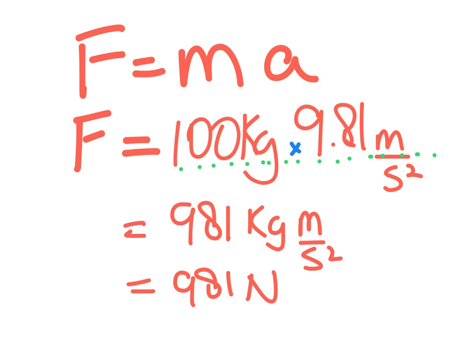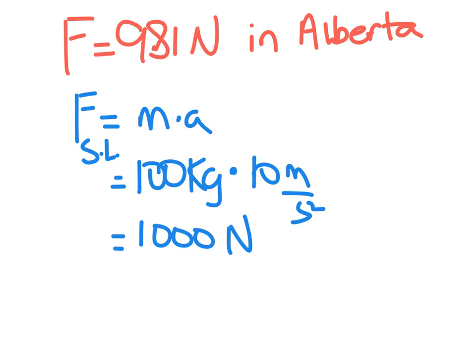How much does he weigh at Victoria, where this occurred at sea level? At sea level, it's still the same formula, mass times acceleration of gravity, so 100 kilograms times 10 meters per second squared equals 1,000 newtons.